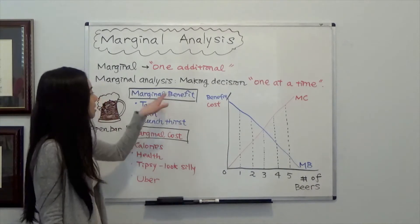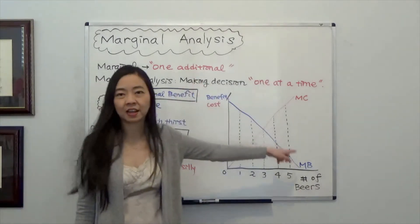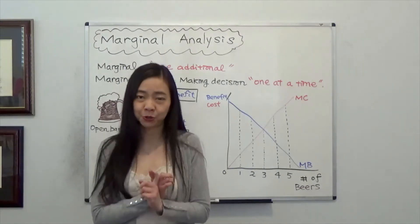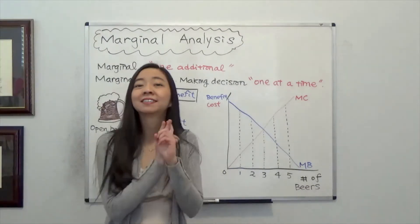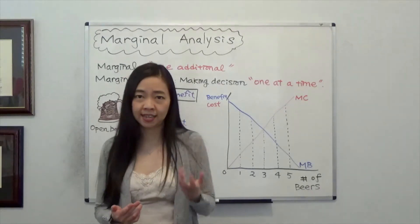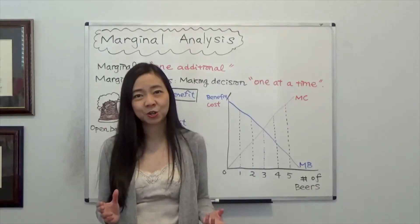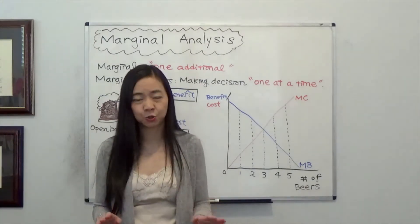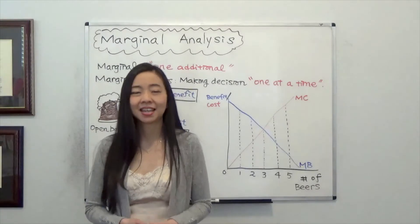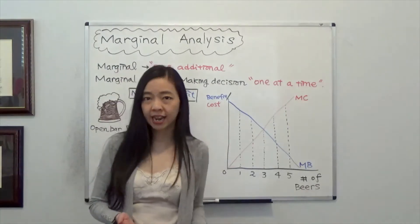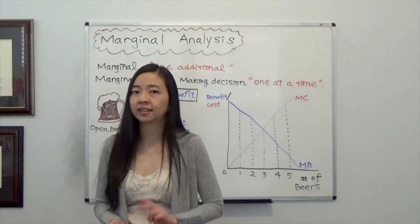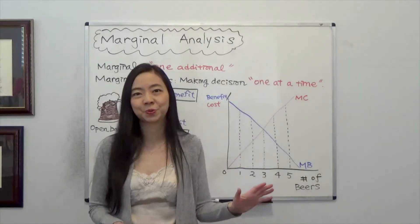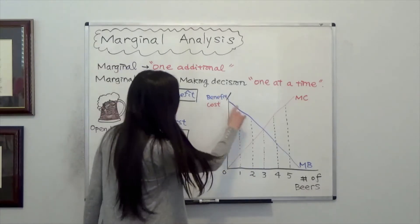Notice that the marginal benefit is going down. Thinking about this, when you're drinking the first can of beer, it tastes very good. And when you're drinking the second can of beer, even though the second can of beer is identical as the first can of beer, the second can of beer just doesn't taste as good as the first can. And likewise, the third can of beer does not taste as good as the second can of beer, even though all these cans of beers are identical. So you can see the marginal benefit is going down.